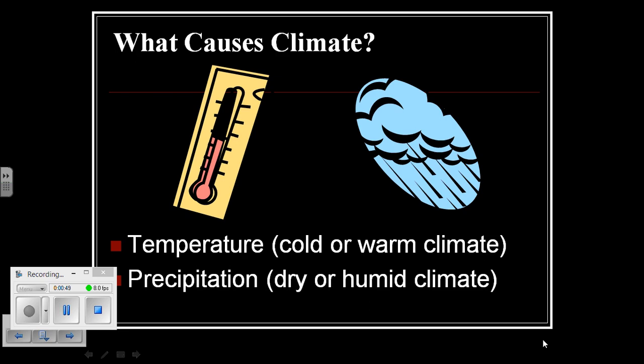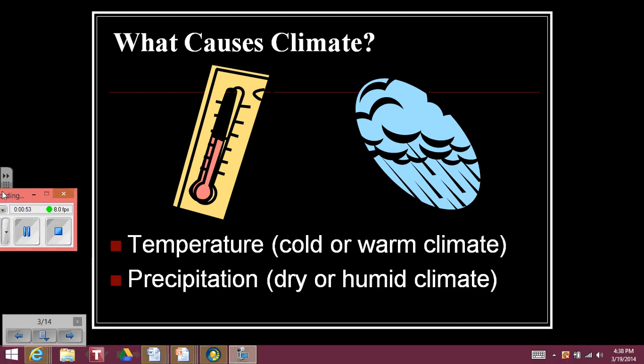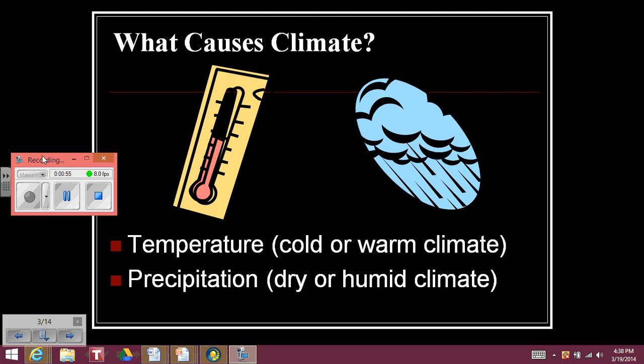What causes climate? Well, there are two things: air temperature, which determines whether it is cold or warm climate, and precipitation, which determines whether the climate is dry or humid.